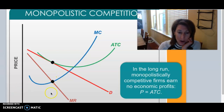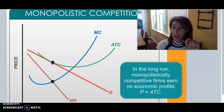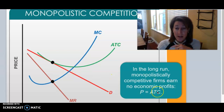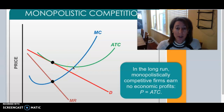In the long run, marginal cost equals marginal revenue, giving us the quantity to produce. When we go up to the price, it's the exact same as the average total cost. So monopolistically competitive firms in the long run earn zero economic profits, because price equals average total cost at the profit-maximizing quantity. Notice we are not producing at the minimum of the average total cost curve, so it's not productively efficient like in perfect competition.